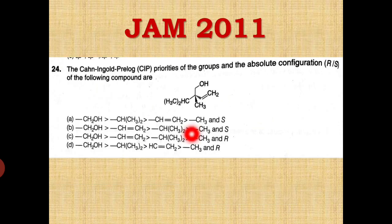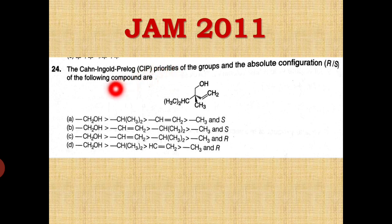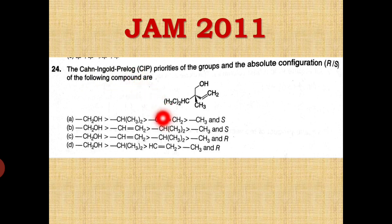Now this is another question from the JAM 2011 paper. The CIP priorities for the groups and the absolute configuration R/S of the following compound are — CIP is the other name for RS nomenclature, named after the scientists Cahn, Ingold, and Prelog who gave this RS nomenclature. A molecule is given; you have to assign priorities and find out the absolute configuration. You can pause the video and try it yourself.